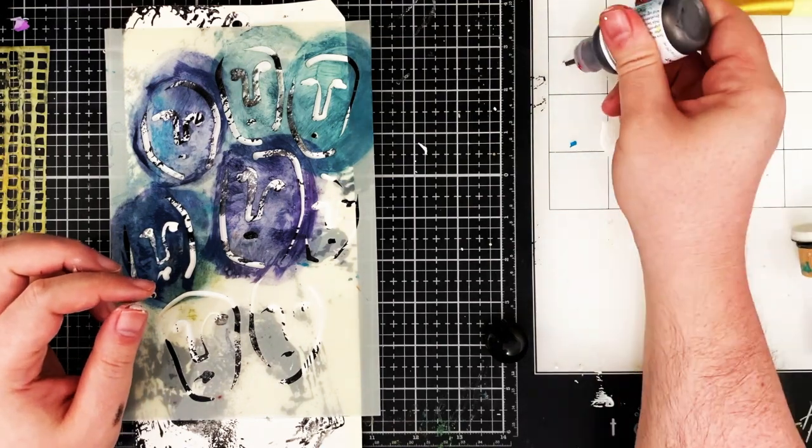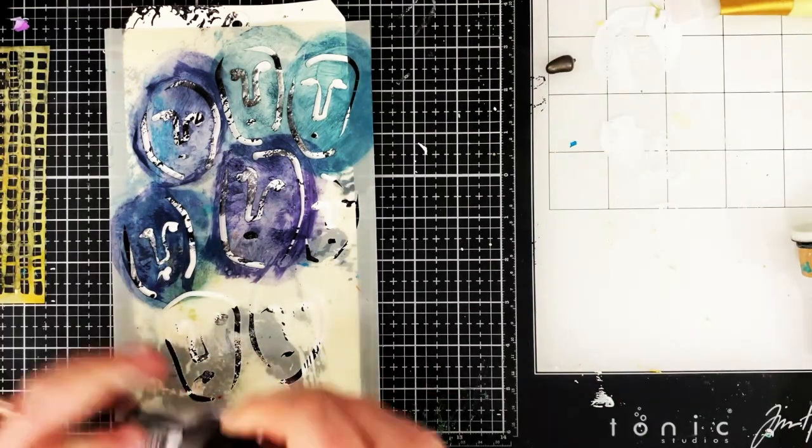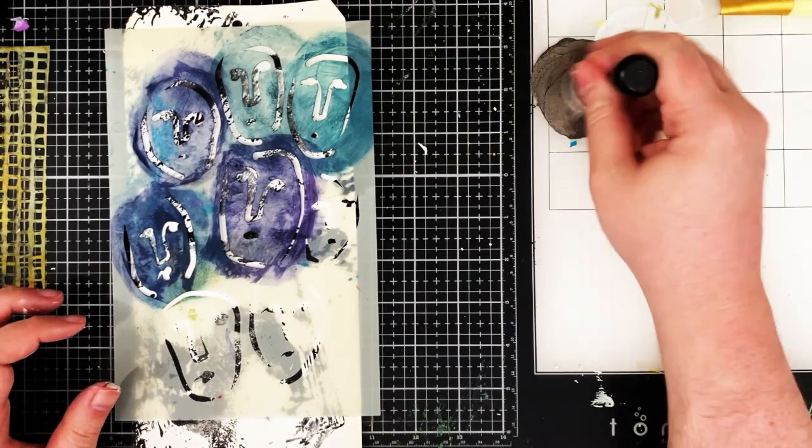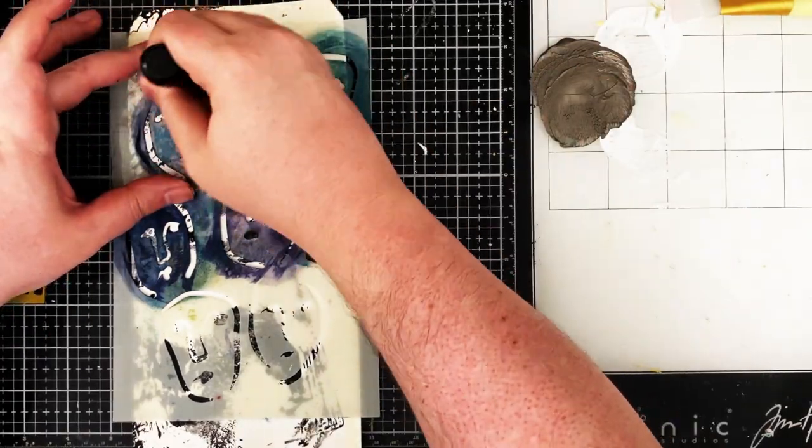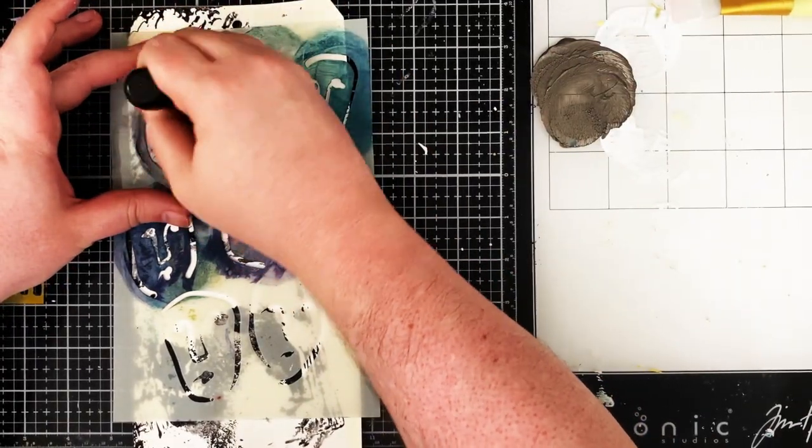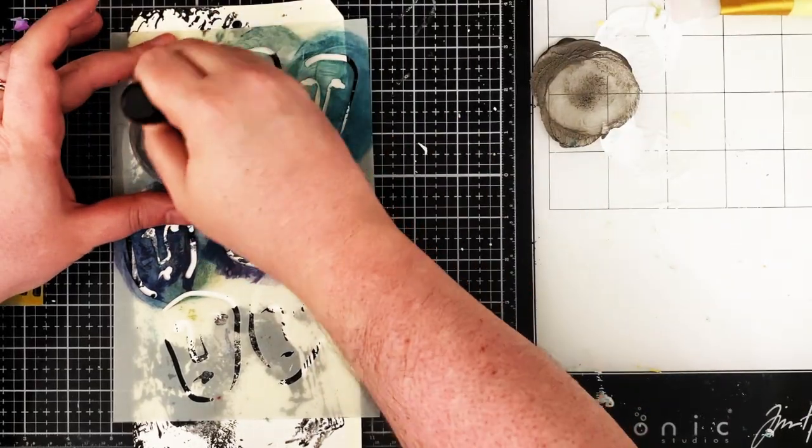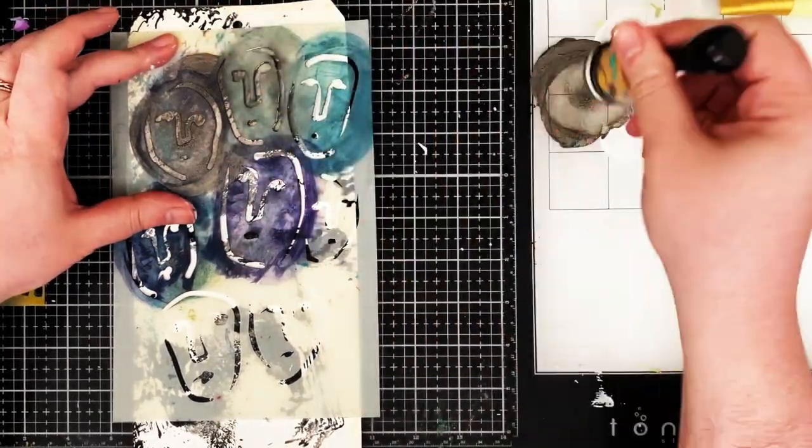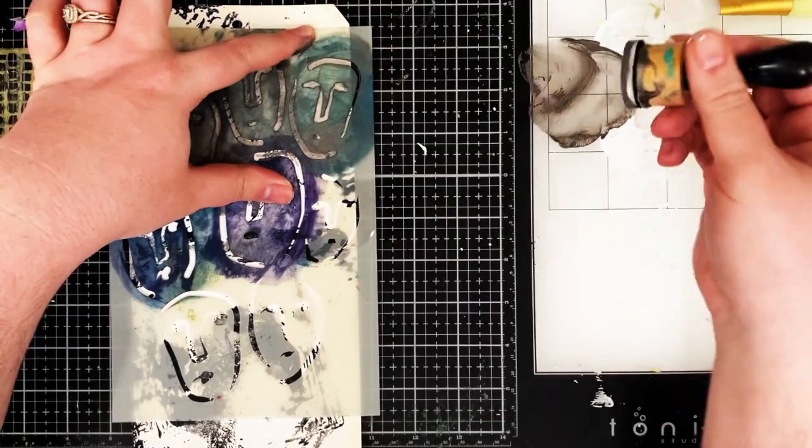With a sponge dauber, I've been watching a whole bunch of the Ranger artists use this technique to apply paint and honestly y'all, it's a game changer. You know how I struggle with stenciling. Well, putting paint through a stencil, this has really changed the game when it comes to that. I don't struggle as much.